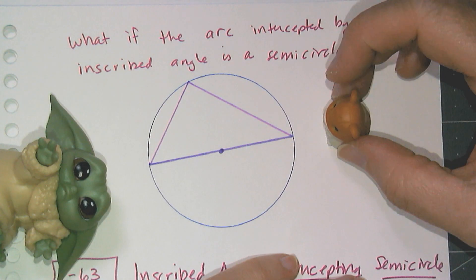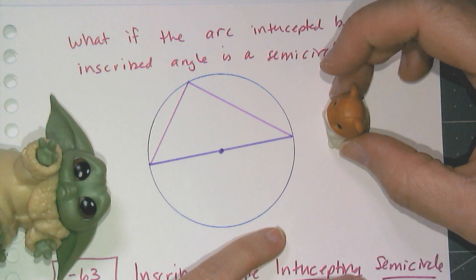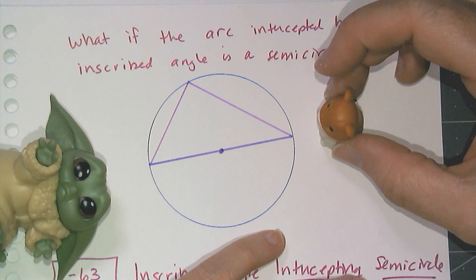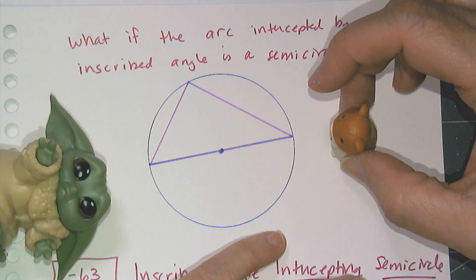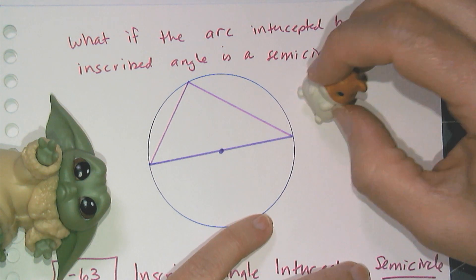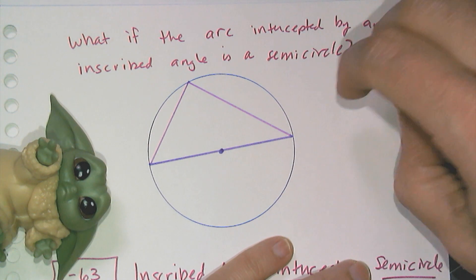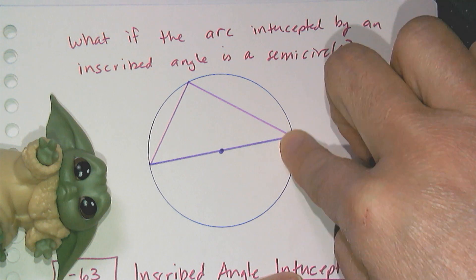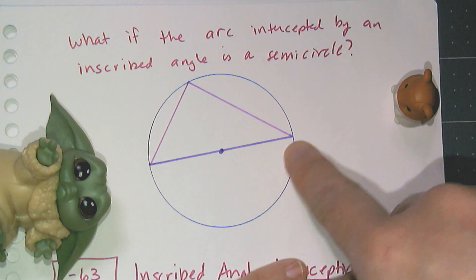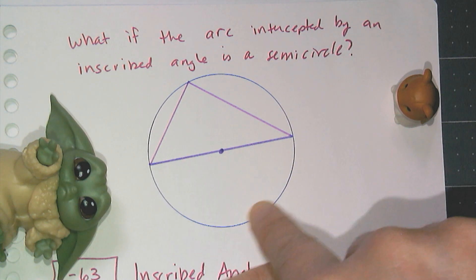Now this next conjecture is going to be about inscribed angles and semicircles. So if I have an inscribed angle, which is right here, it's going to intercept this arc, and I drew in the diameter to show that the arc that it intercepted was a semicircle.